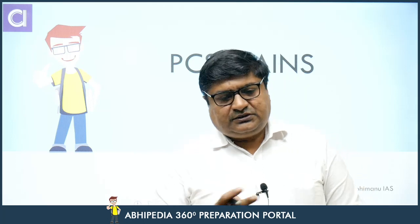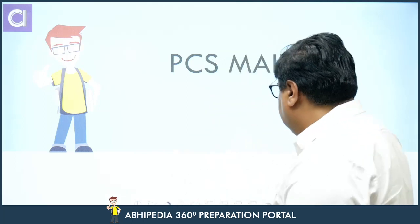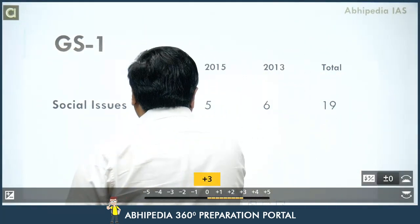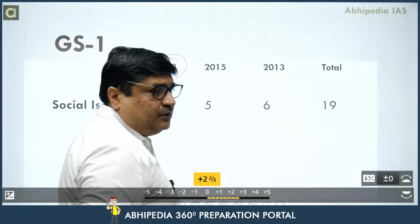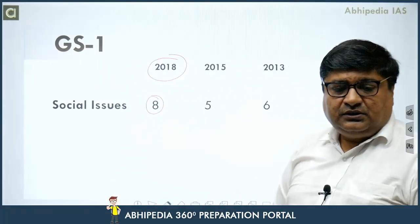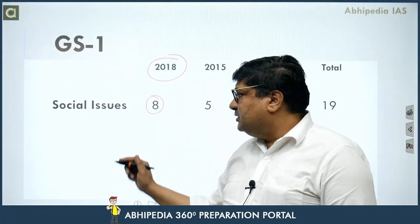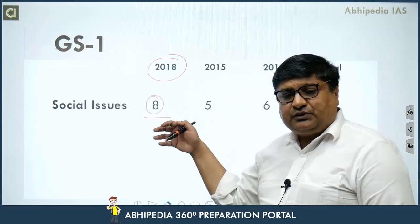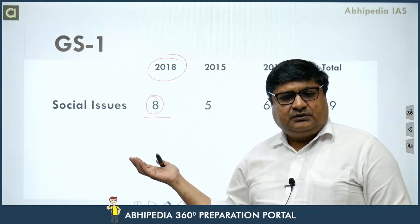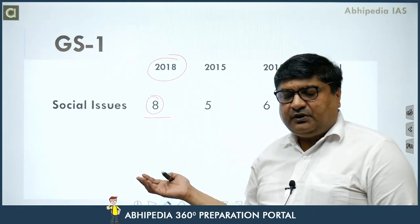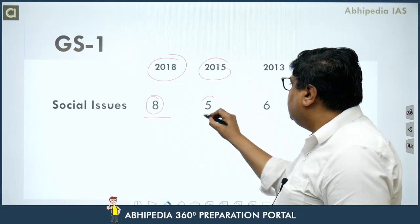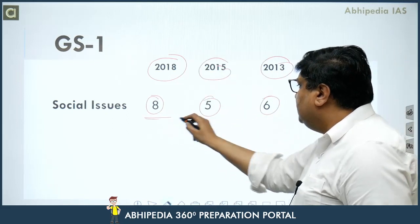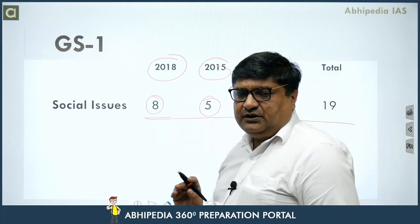Eight questions have been asked from this part, which was the highest in the whole GS Paper 1. In 2015 there were 5 questions, and in 2013 there were 6 questions. So every year the weightage is significant.